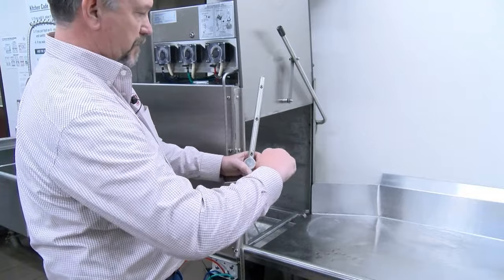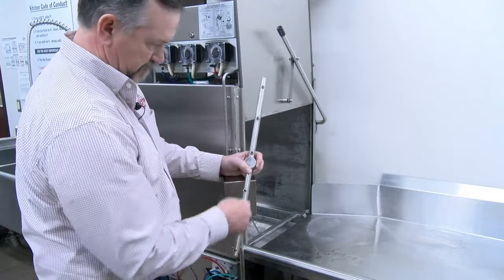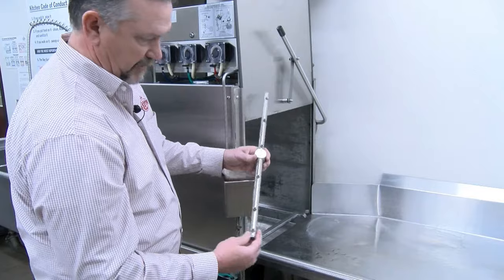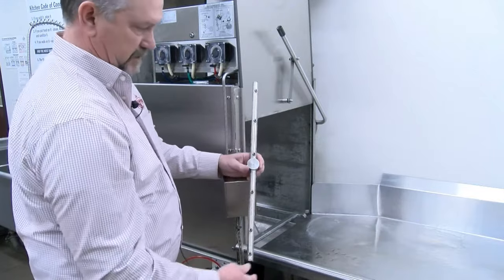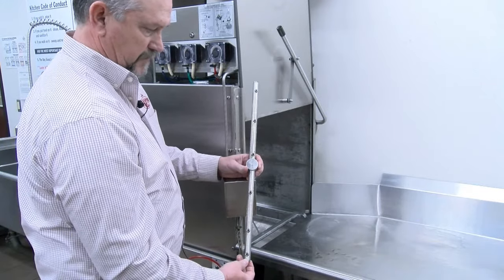Turn a quarter turn. Pull the wash arm out. Make sure they're clean. This arm will not even spin if the end jets are plugged.